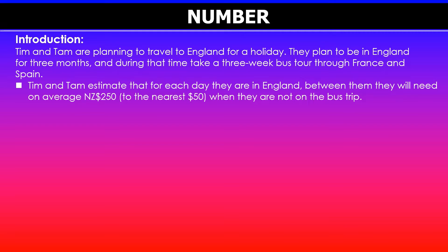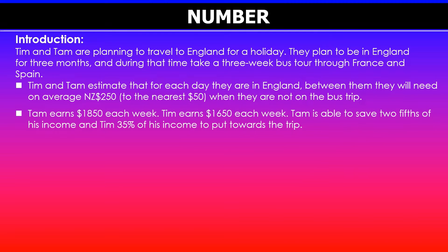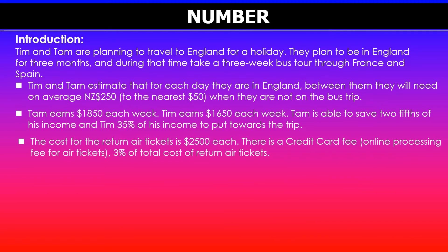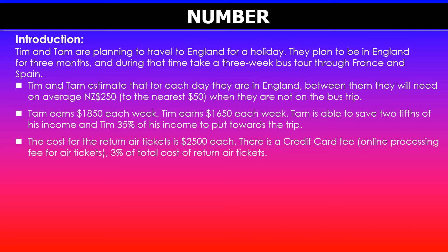We are also given information about their weekly earnings. Tim is able to earn $1,850 each week, and Tam is able to earn $1,650 each week. We also know that Tim is able to save two-fifths of his income, while Tam is able to save 35% of her income, and they will be able to put this towards their trip. The cost of the return air ticket is $2,500 each — remember, it's each, so we will need to double this for both of them.